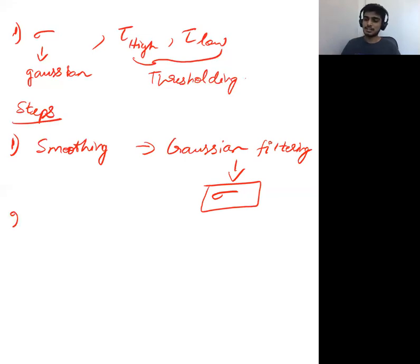The second step after smoothing is now we come to the edge detection part. After smoothing, you have to apply any of the edge detection filters like the Sobel filters or the Prewitt filter. You use any one of them to find the gradient magnitude and gradient direction.